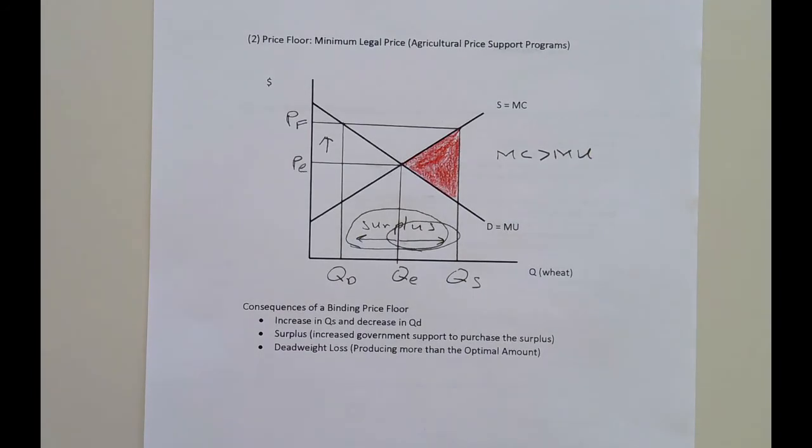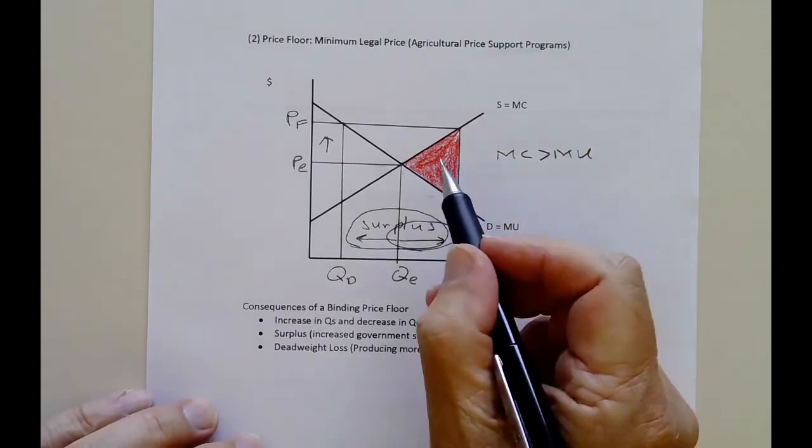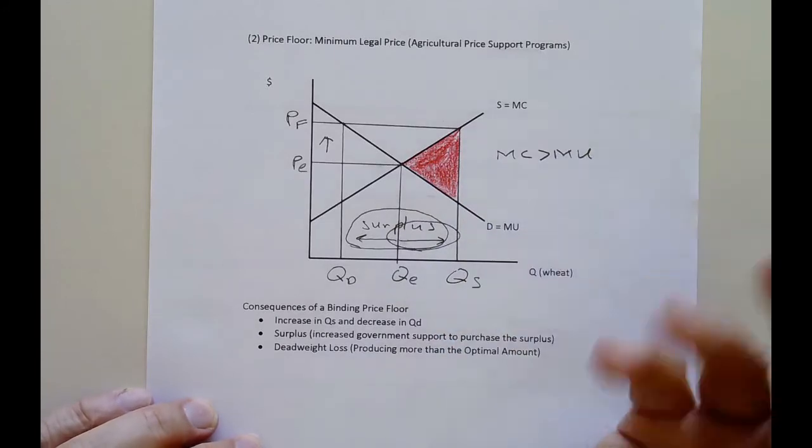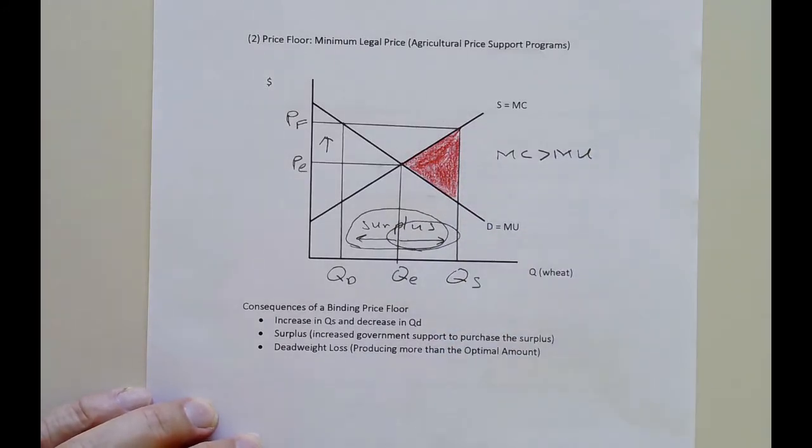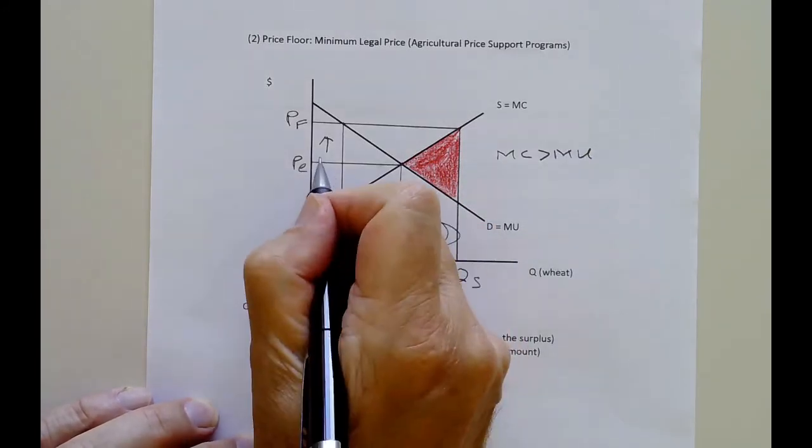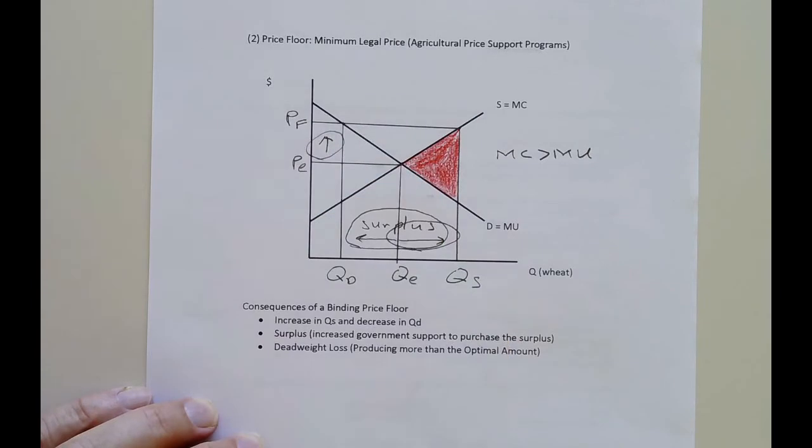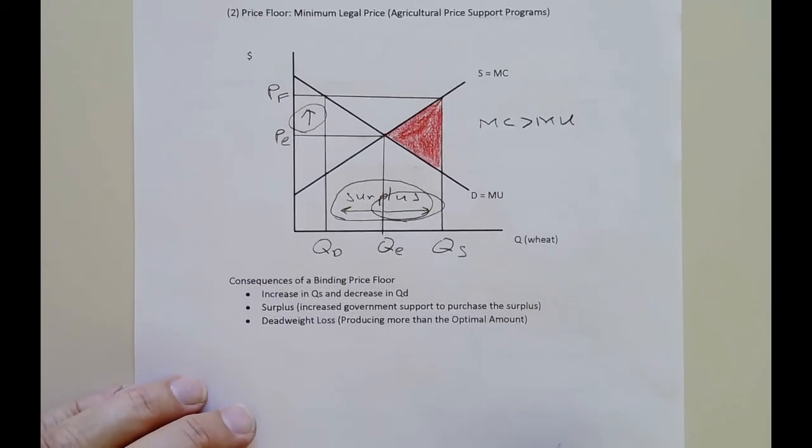So it really hits the society twice. First of all, we overproduce a lot of wheat, a lot of food, and therefore that's wasteful. But it also hits the consumers as well with higher prices. And also higher taxation to buy the surplus up. And then the government has to decide what to do with the surplus. And that's a whole different problem on its own. So a very wasteful program.